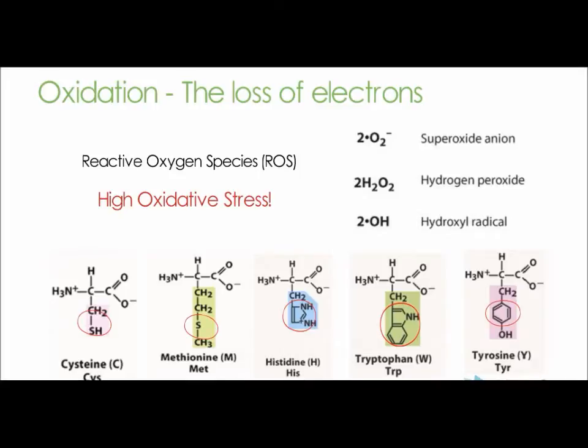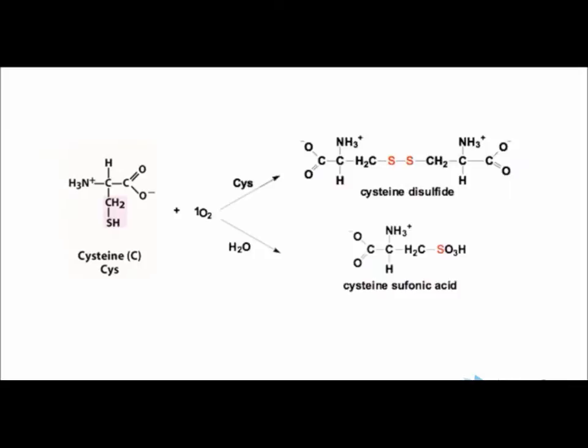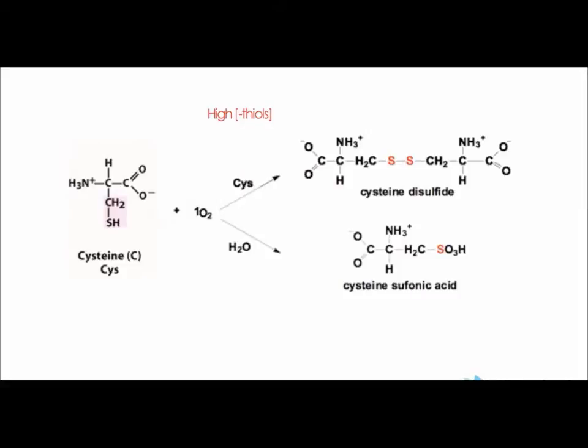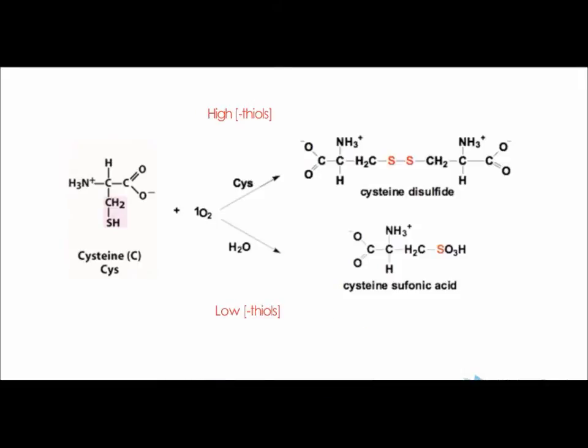Now let us look at the oxidation of cysteine residue as an example. It can lead to two consequences. If the concentration of tyrosine is relatively high, it gets bonded with another cysteine to form a disulfide bond, causing deformation of the protein structure. Or when the concentration is low, it gets hydrolyzed by water to form cysteine sulfonic acid, causing a breakage in the peptide backbone. The various oxidative damage promotes massive production of ROS in host cells, inflammation, and accumulation of misfolded proteins. There are at least 99 known diseases that are caused by oxidative damage.